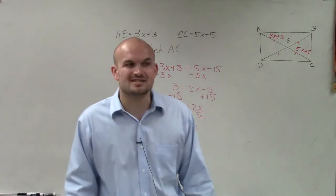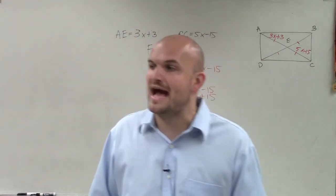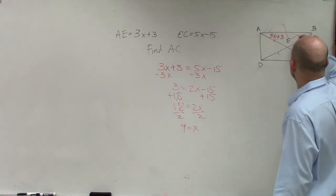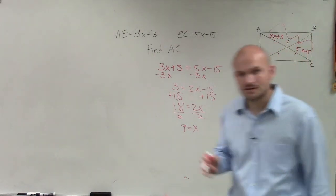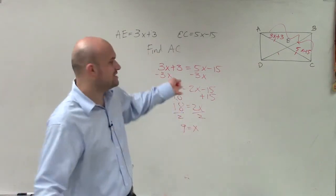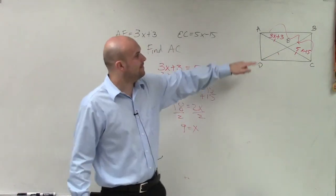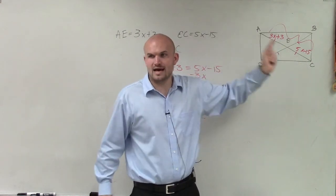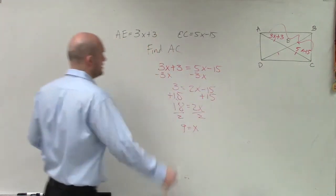But that's not what the question is asking. The question is not asking find the value of x. The question is asking find the length of this whole length, right? Now you could make an equation for both of these combined, but if I just find the length of one side, can I double it to find the length of the whole diagonal? Yeah, so let's just find AE.